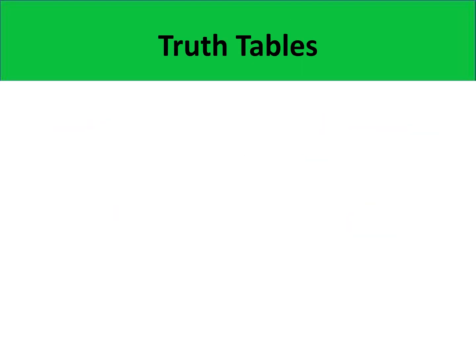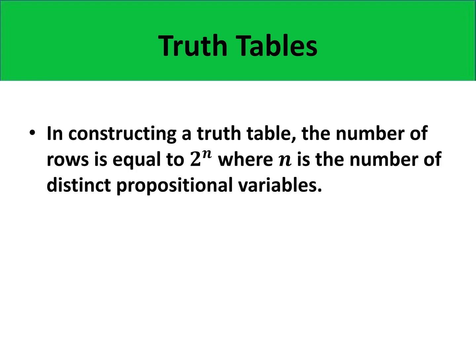In constructing a truth table, the number of rows depends on the number of distinct propositional variables of the given proposition. So if the proposition has n distinct propositional variables, then the total number of rows is computed as 2 raised to n.